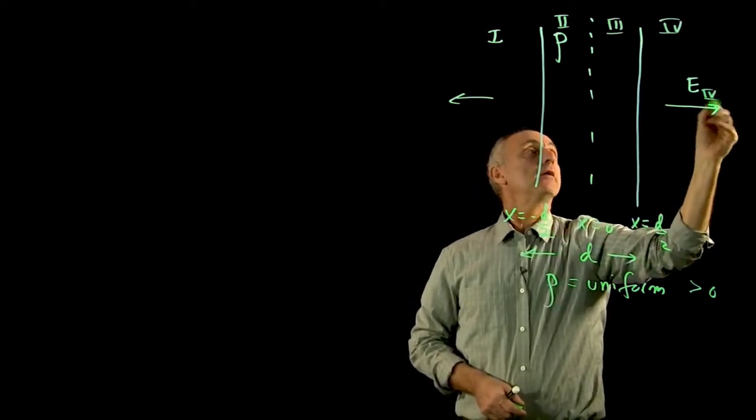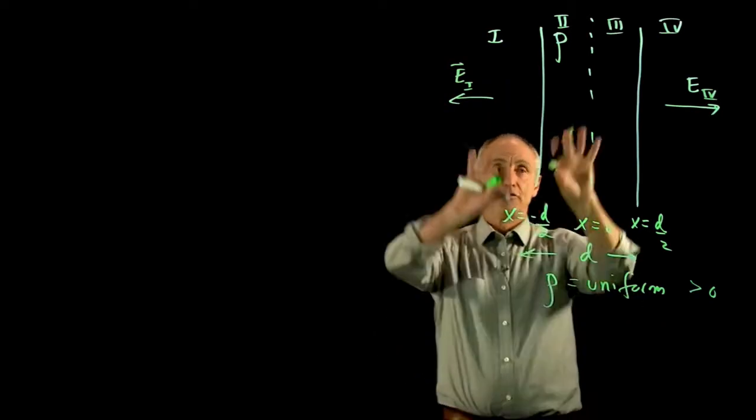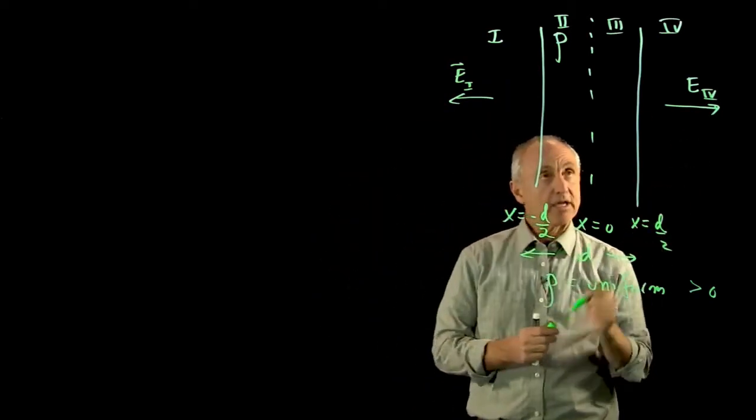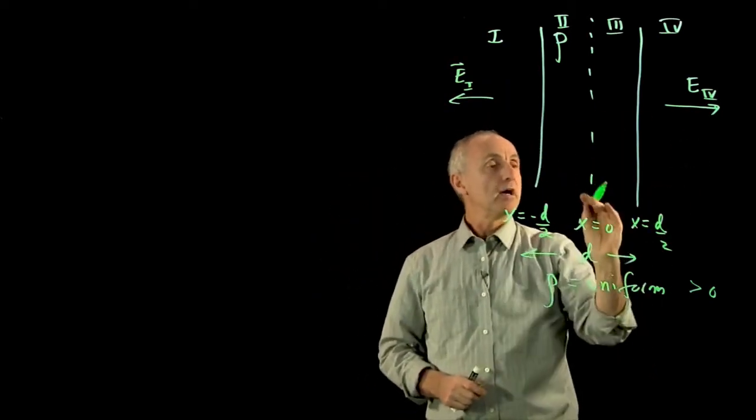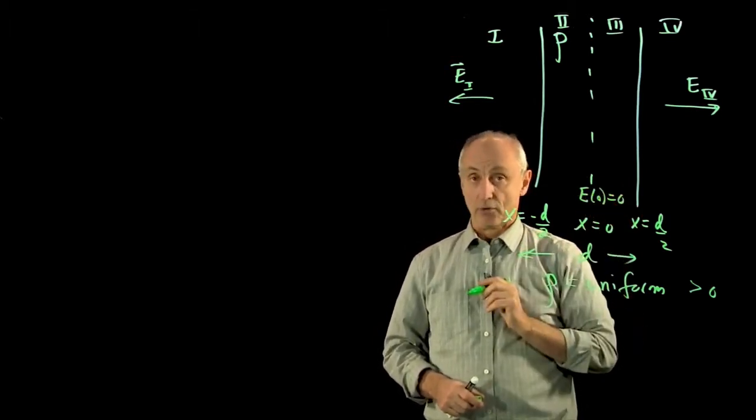And on the outside, I'll just put e outside with the region denoted. The field should point away. Now, inside, it's interesting that we know at the center, the field has to be 0.